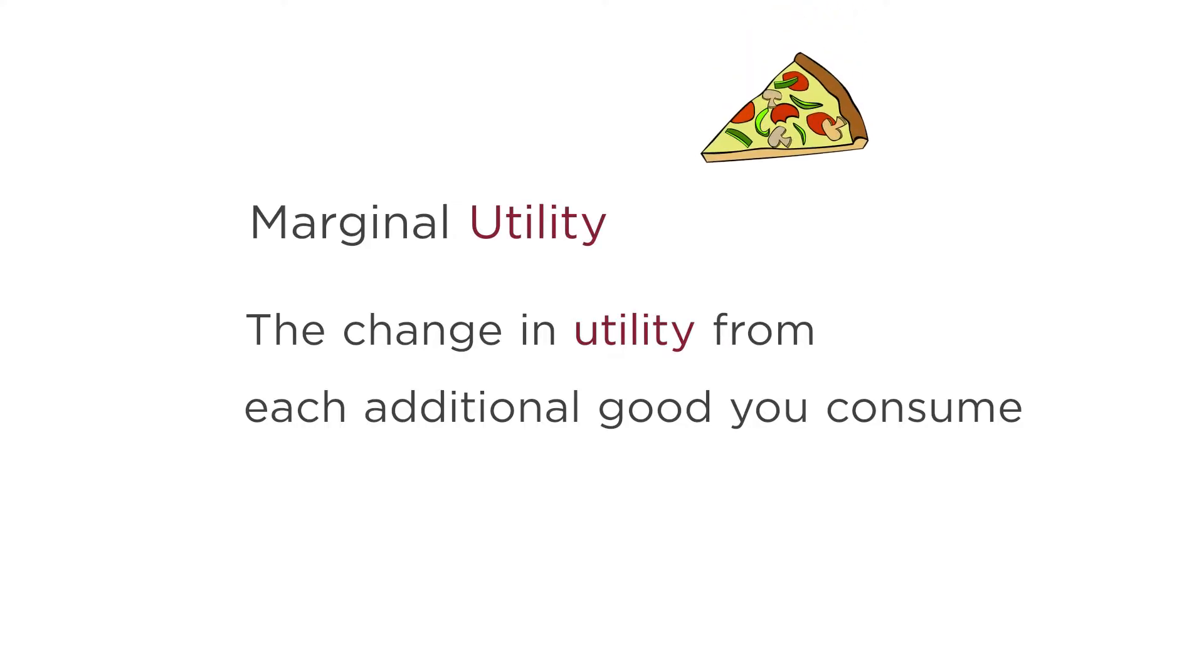A utility function tells you how well off you are. But how does it help you resolve the tough decisions you need to make? Like should I have the next slice of pizza? To do that, we need to bring in a new concept, marginal utility. Marginal utility is the change in utility from each additional good you consume. Or how much utility do you get from the next slice of pizza?